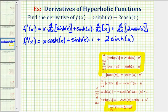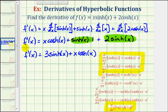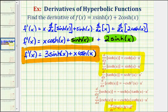So this is our derivative, but we can go ahead and combine these two like terms. So f'(x) is equal to three hyperbolic sine x plus x hyperbolic cosine x. And that'll do it for this example. I hope you found this helpful.